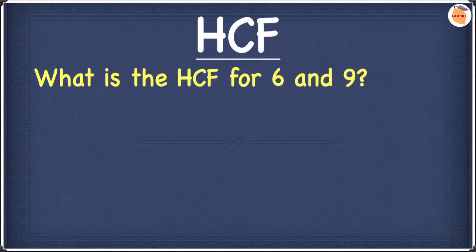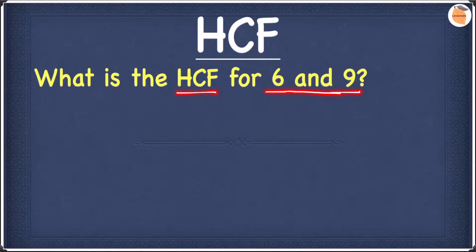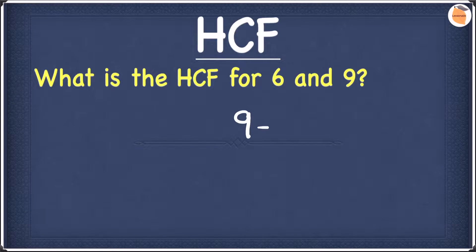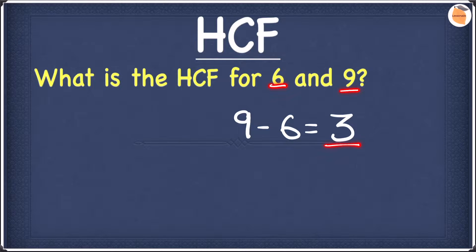Let's have a look at the first HCF trick. The example we have is: what is the highest common factor for 6 and 9? Rather than doing factor trees and division ladder to find the answer, we have a simpler shortcut. Start by finding the difference between 9 and 6 — 9 minus 6 gives you 3. Then check whether 3 is a factor of both 6 and 9, and yes it is. So the highest common factor for this question is 3.